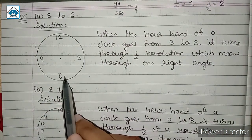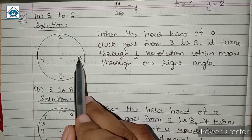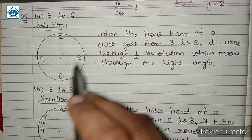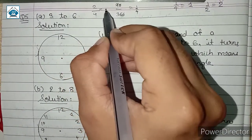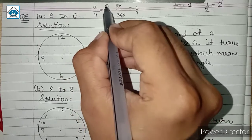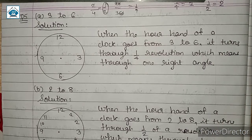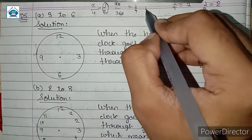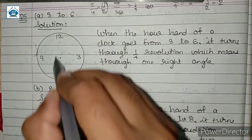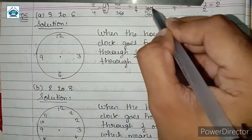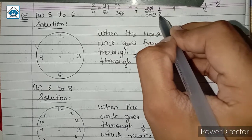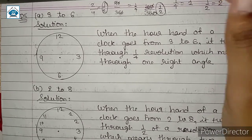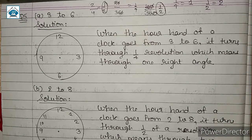Talking about 1/2 revolution: we start from 2 and stop at 6. The clock is divided into 4 parts; we cover 2 parts out of 4. So 2 parts by 4 parts means we say 1/2 part of a revolution, and how many right angles? Two right angles — because two parts means 90 plus 90 equals 180, and out of a total of 360, that gives us 1/2.